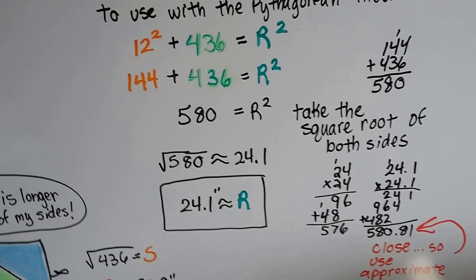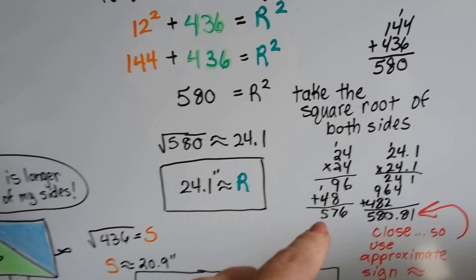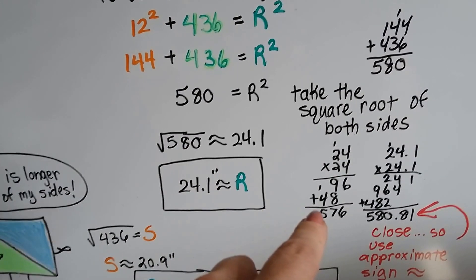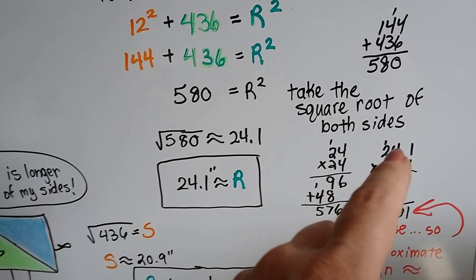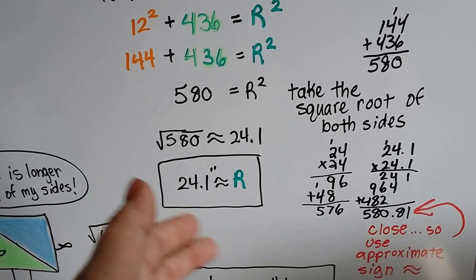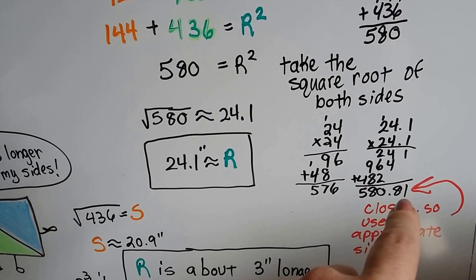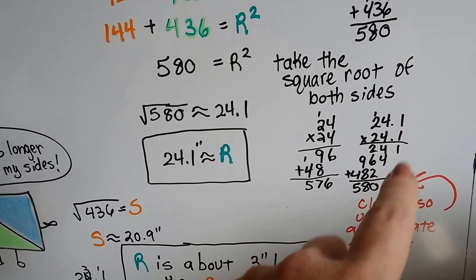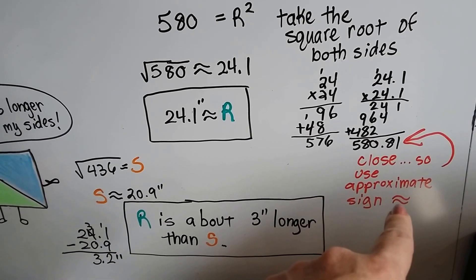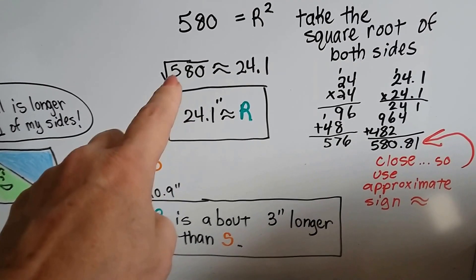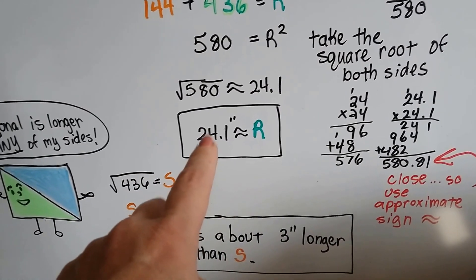Now we need to take the square root of both sides. What is the square root of 580? I tried 24 times 24 and got 576 — that wasn't big enough. I just needed 4 more to reach 580, so I thought, what about 24.1? I tried 24.1 and got 580.81. I could have tried 24.09 and kept getting closer, but 580.81 is close enough. Using the approximate symbol, the square root of 580 is approximately 24.1, so R is about 24.1 inches.